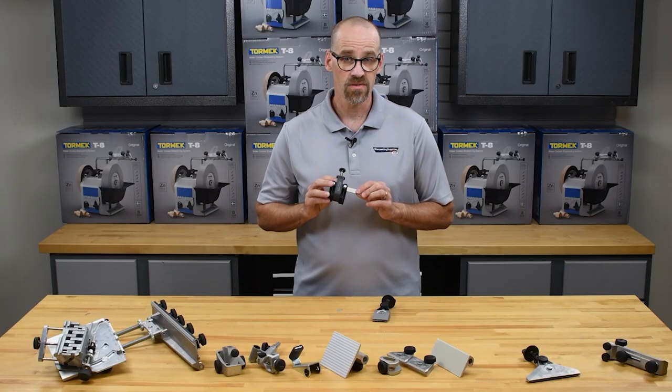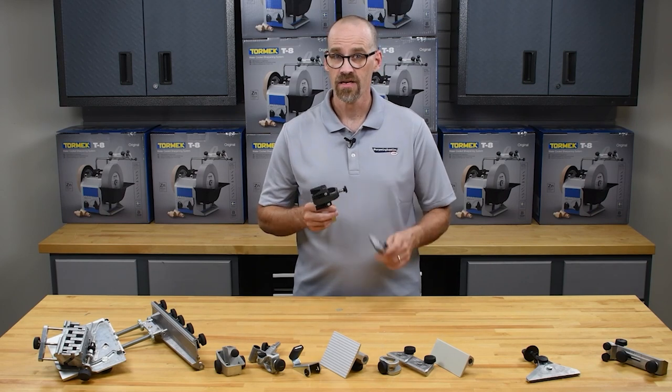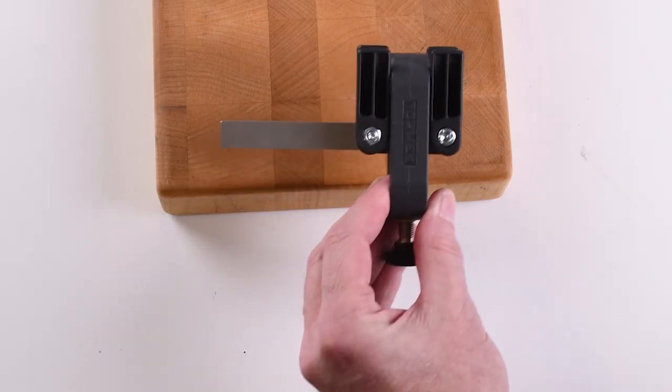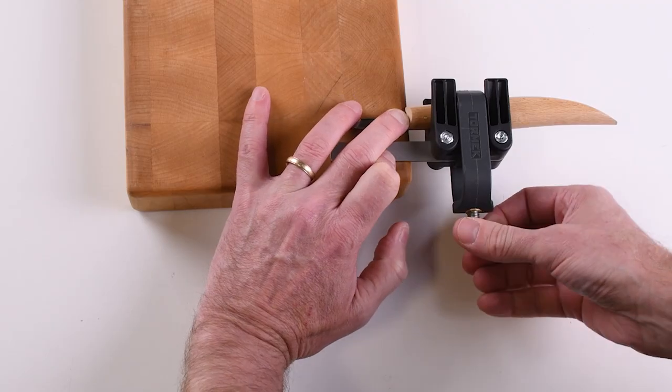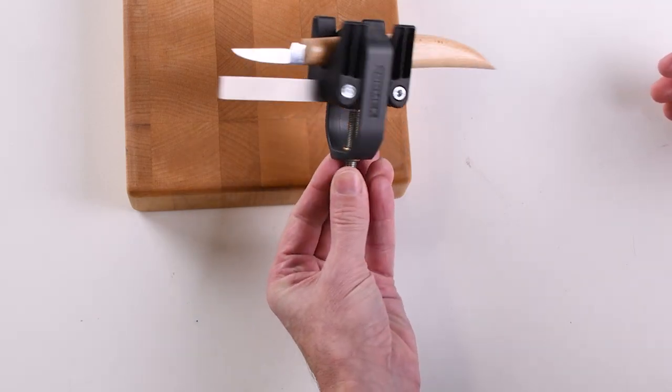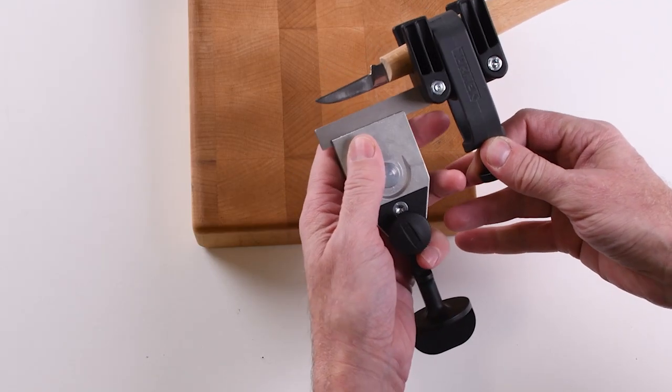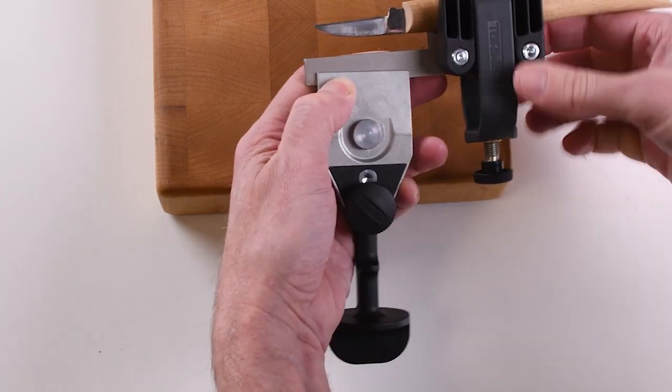The SVM00 Short Knife jig works in conjunction with the KJ45 to hold very small blades. Insert your knife into the jig and lock in place. Ensure that the knife is in line with the support bar. Insert the support bar into the jaws of the KJ45 knife clamp and secure.